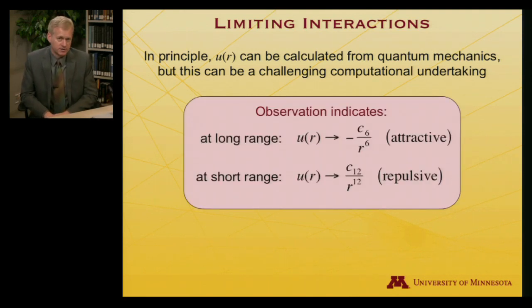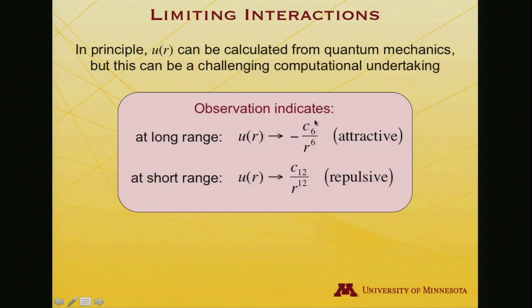A lot of observation indicates that in a simple way, if you have two things interacting, at very long range there is an attractive interaction. As they begin to come closer to one another and begin to feel one another, they interact with a 1 over R to the sixth dependence, and a negative symbol here means it's attractive. There is some characteristic coefficient called the C₆ coefficient that dictates how large that attractive interaction is.